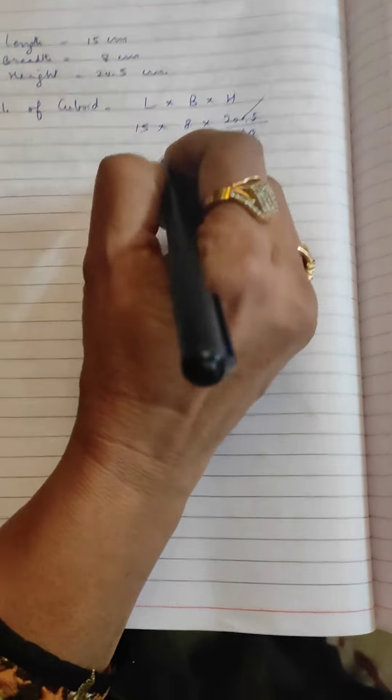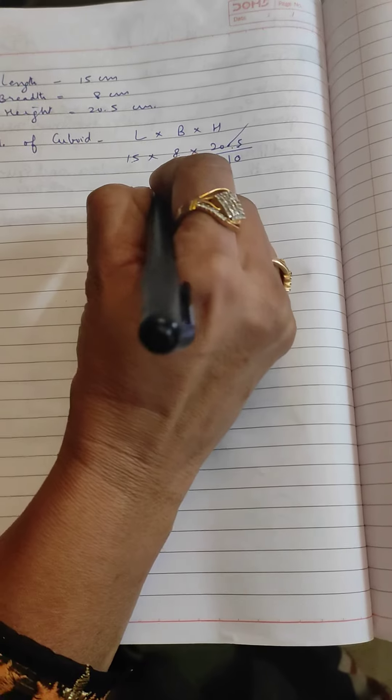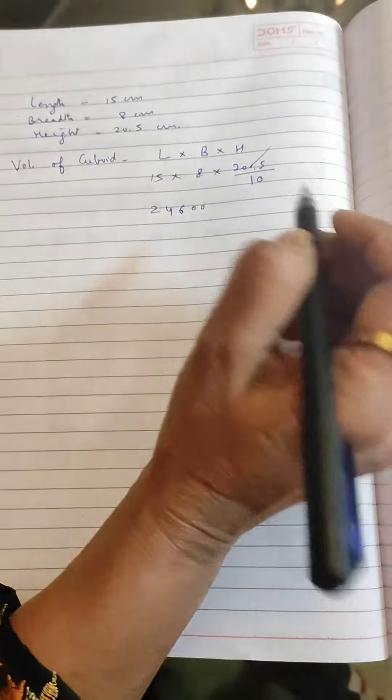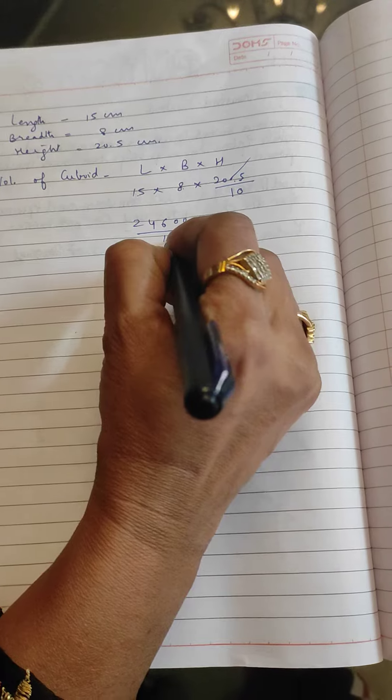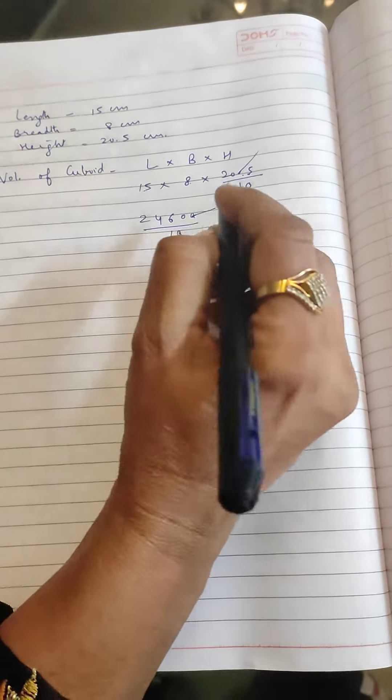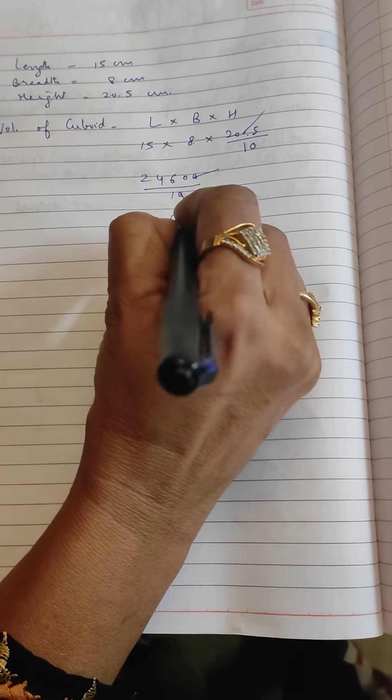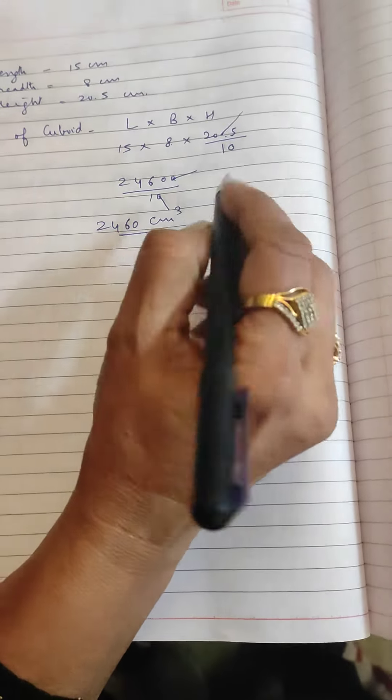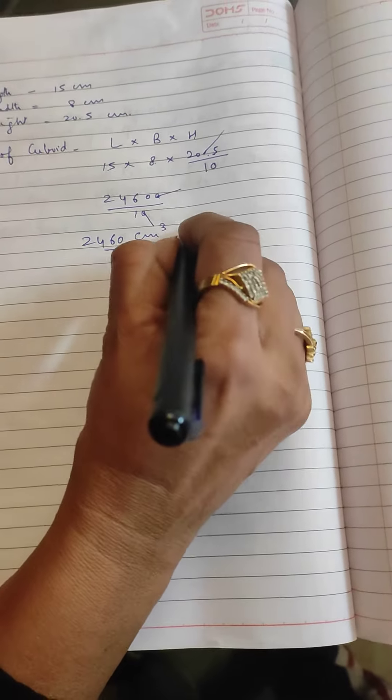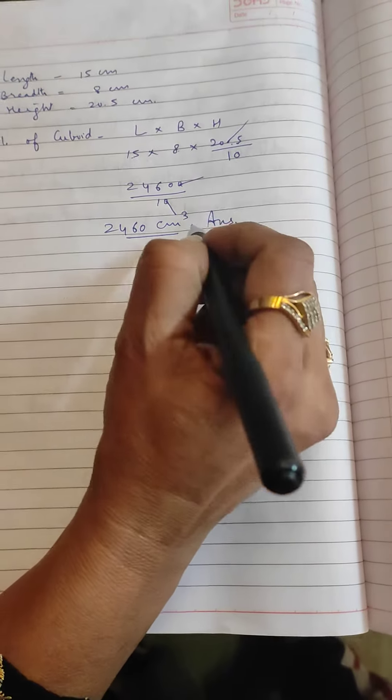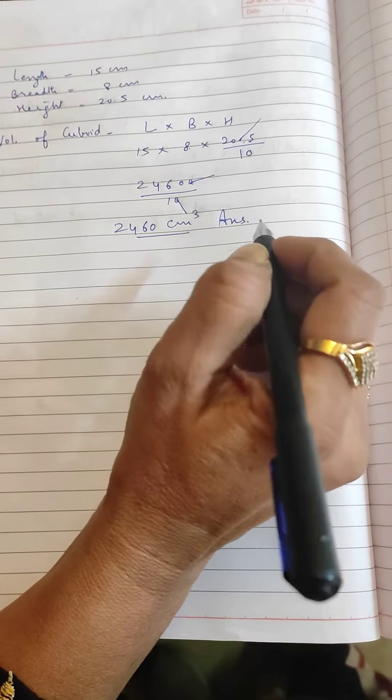And the answer will be 2460. Now down there we have ten, we will cut one zero with one zero, so the answer will be 2460 centimeter cube. Because the volume has its unit as centimeter cube or meter cube. Understood?